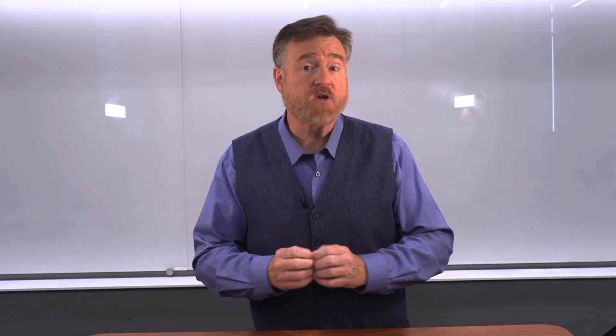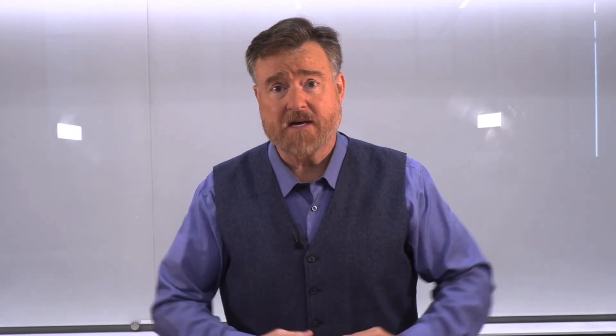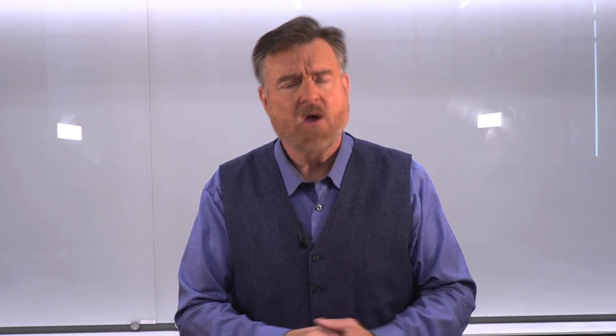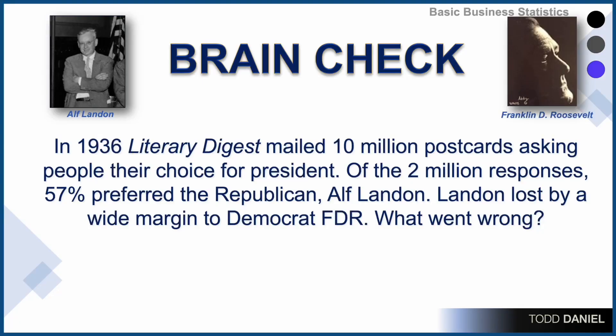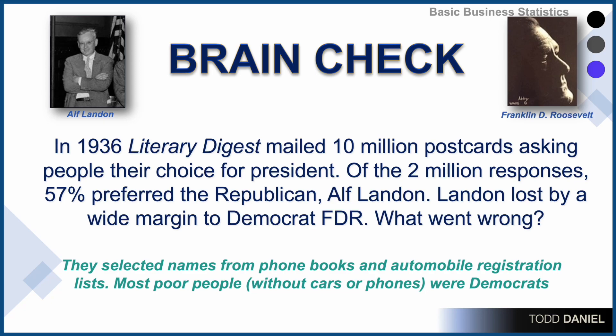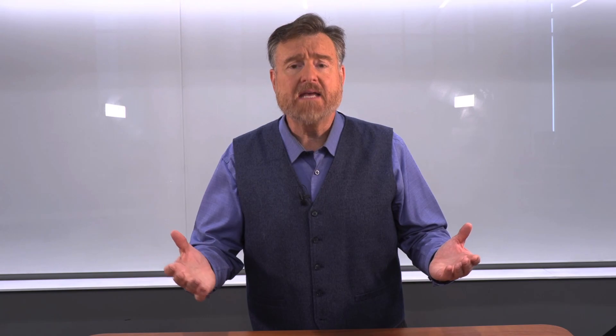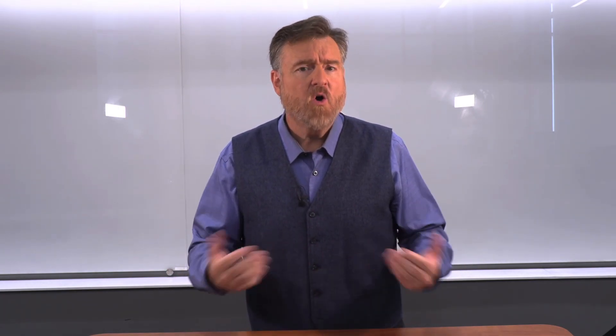Was the problem that they mailed all of their postcards only to their own readers? That was not the problem either — they mailed out those postcards much more widely. The answer has to do with where the Literary Digest got the names, addresses, or phone numbers used to select people who would receive a postcard. These names were selected from phone books and automobile registration lists. Think about 1936 — we were in the Great Depression. Who had their own phone? Who had their own vehicle that could be registered? People who had more money, and those people were more likely to support the Republican candidate. Therefore, we have sampling error: asking too many of the same people and getting a skewed result in the sample.